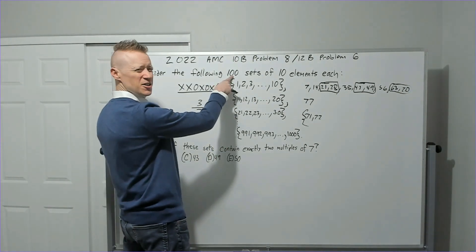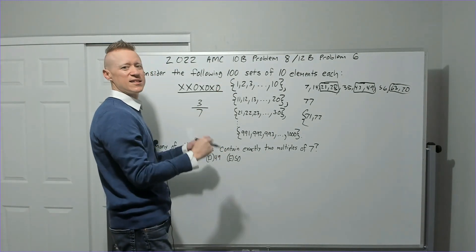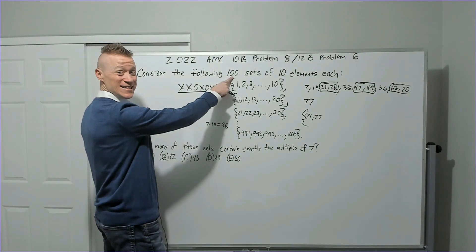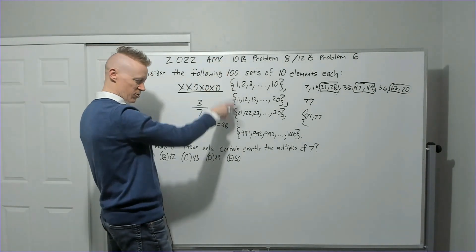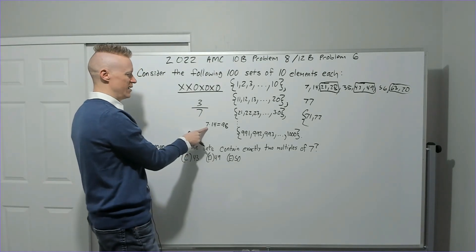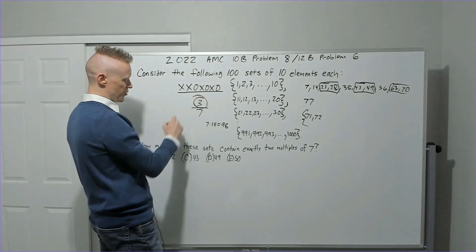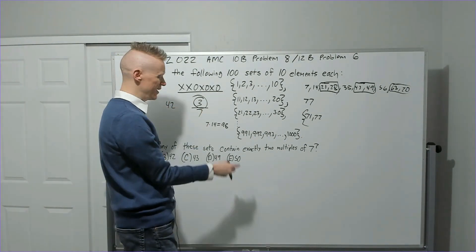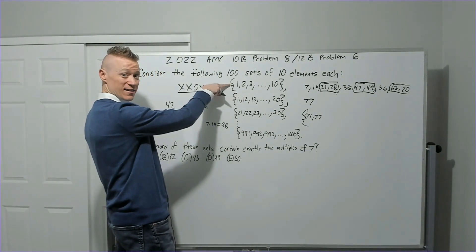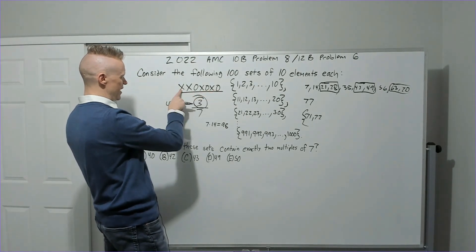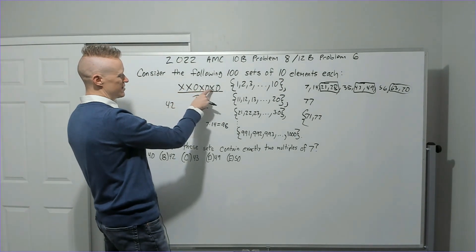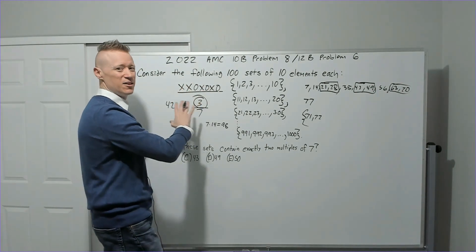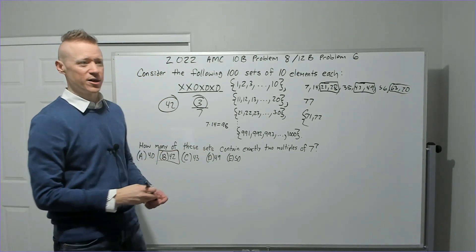Now with 100 groups, 98 = 7 × 14, so in the first 98 sets there are 14 groups of 7. Each group has 3 good ones, so 14 × 3 = 42. Sets 99 and 100 restart the pattern and are both X's — no good. The answer is 42, Jackie Robinson.